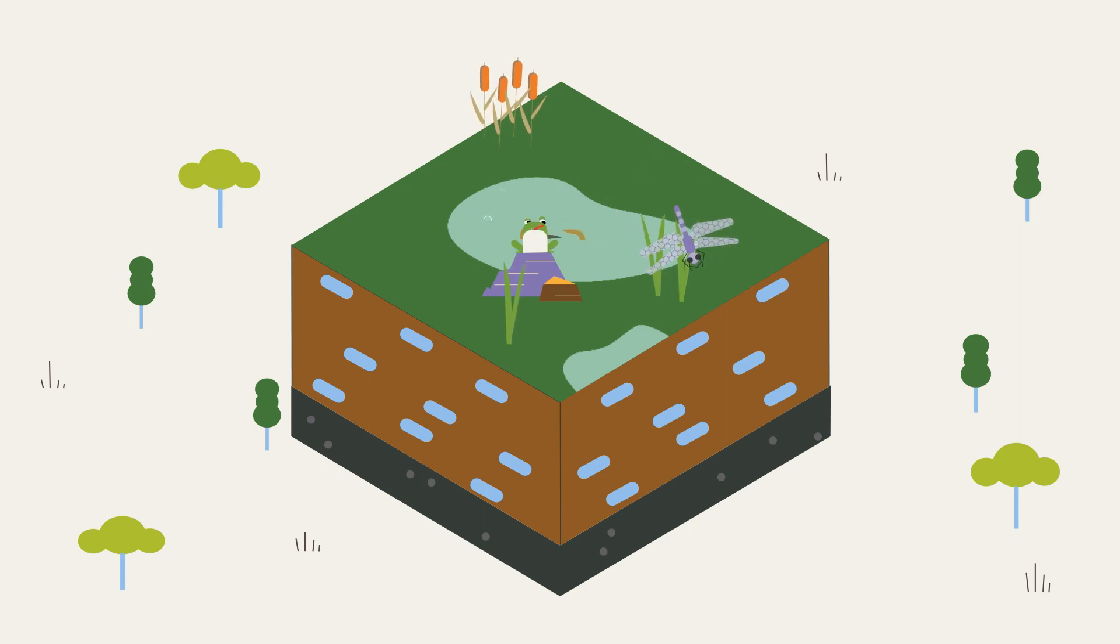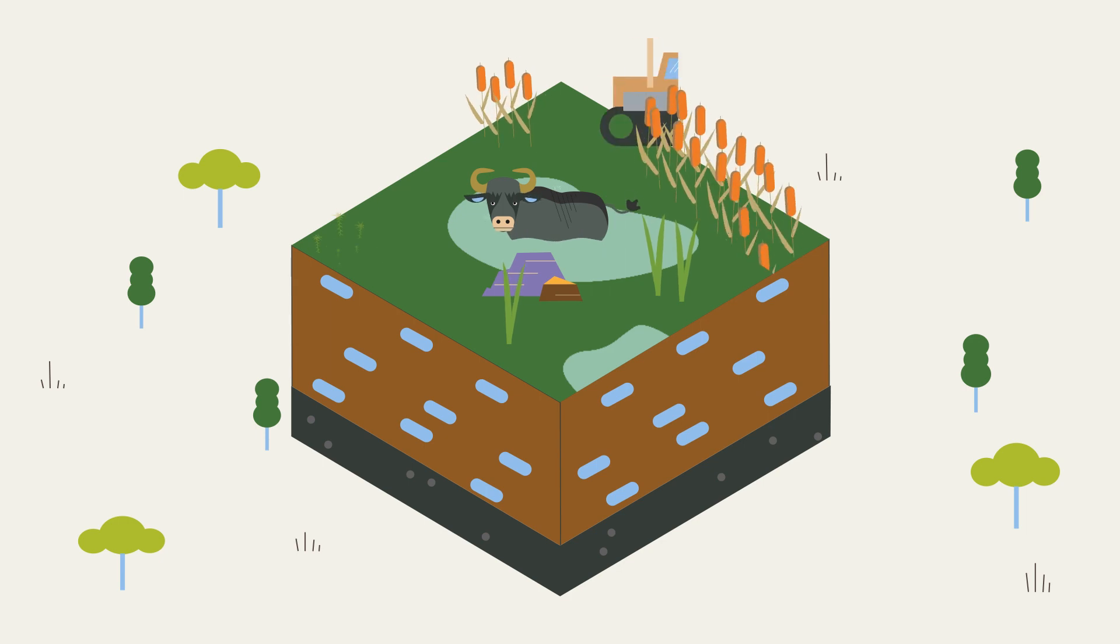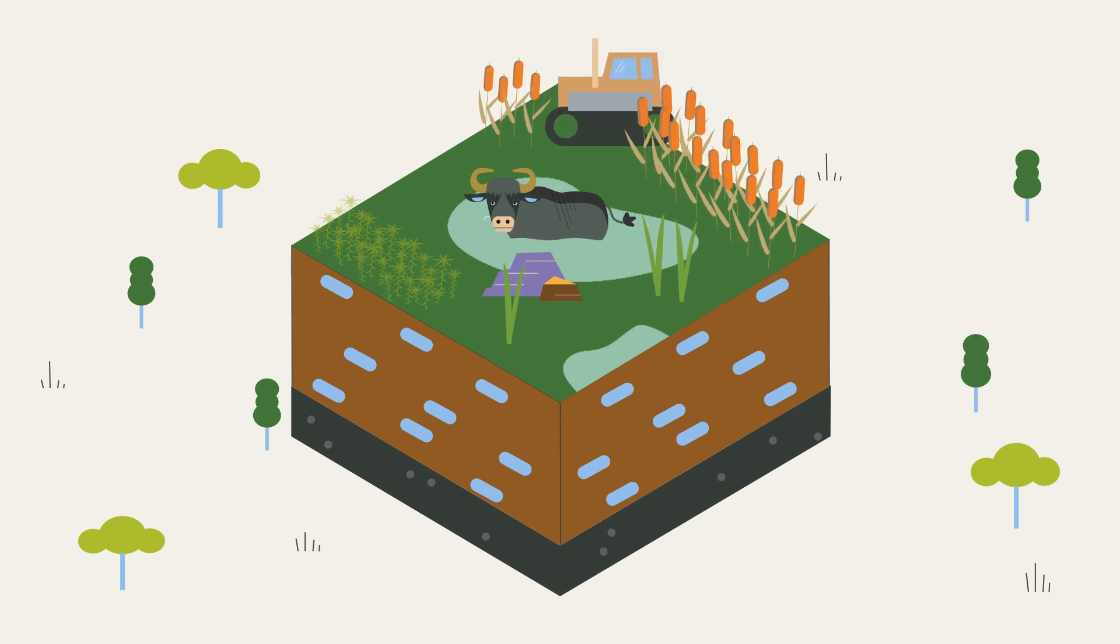In the meantime, we have also found out how to use wet and waterlogged areas sustainably. For example, with paludiculture. So when we grow crops on wet soils which grow particularly well exactly there.